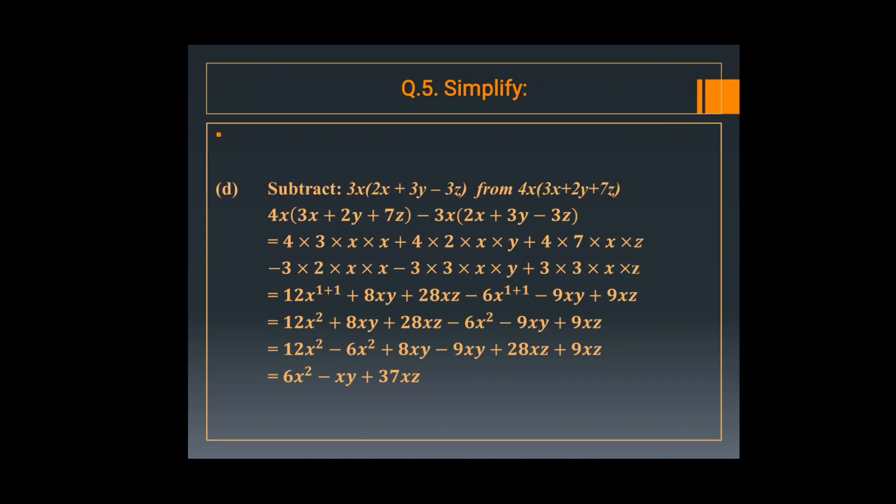Now in part d: similar to the last question. First multiply 4x by 3x, 4x by 2y, and 4x by 7z. Then subtract: minus 3x by 2x, minus 3x by 3y, and minus 3x by minus 3z. So it is 12x square plus 8xy plus 28xz minus 6x square minus 9xy plus 9xz. Combining like terms: 12x square minus 6x square gives 6x square.